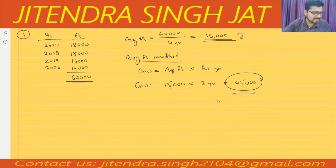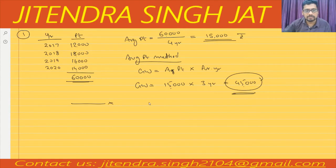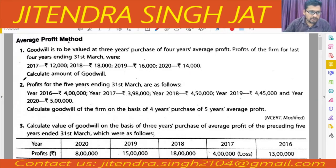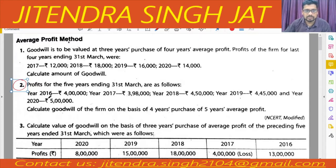I hope this is a very simple method and it is clear to everyone. So let's move on to question number 2. Profit for the five years ending 31st March are given for 2016 to 2020. Calculate goodwill of the firm on the basis of four year purchase of five years average profit.